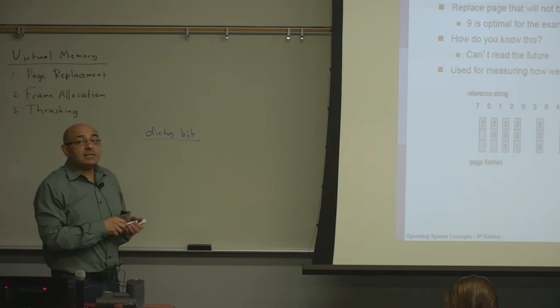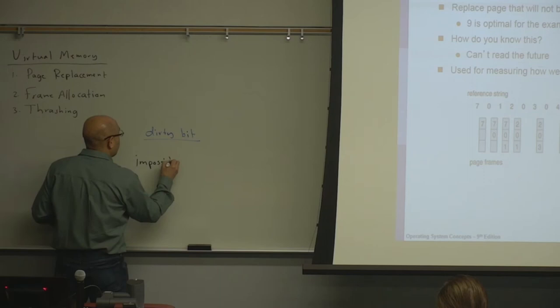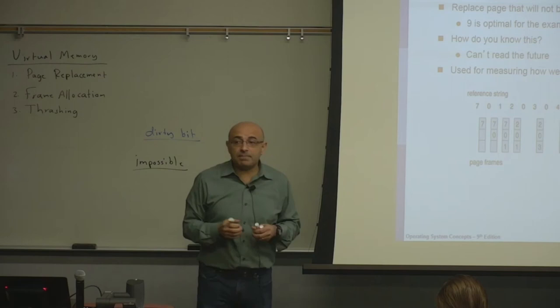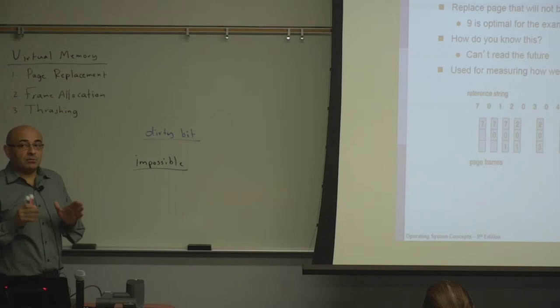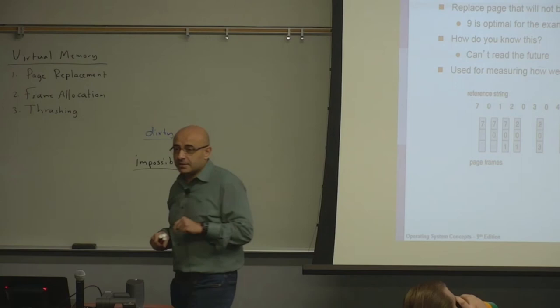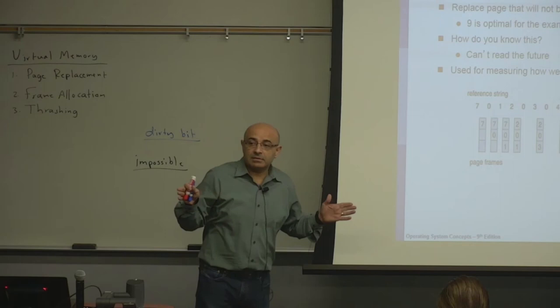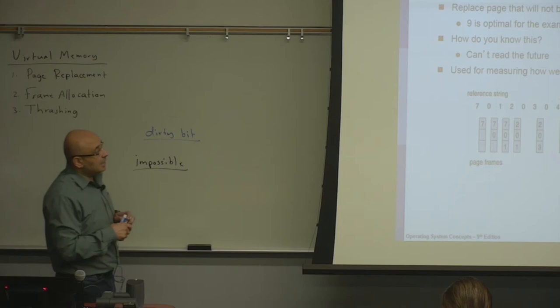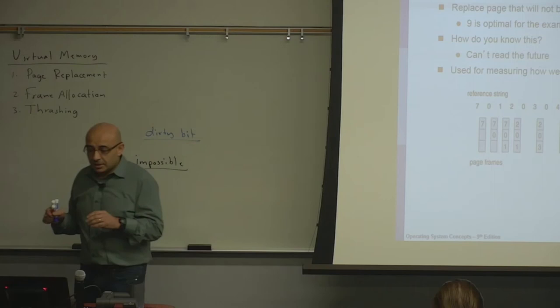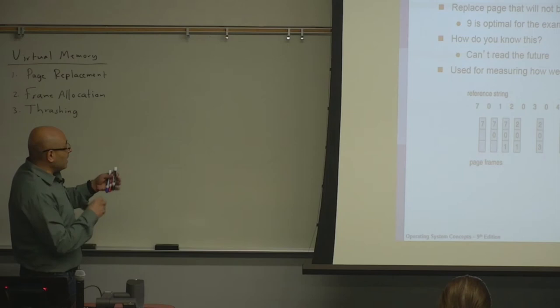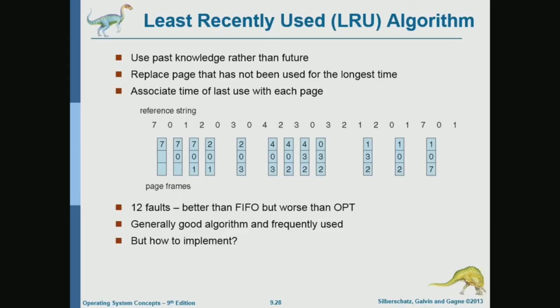A real system doesn't know the future; it knows the past. Given that we know the past but not the future, we can implement an algorithm that approximates the optimal by looking into the past and picking for replacement the page that hasn't been used for the longest period of time — the page whose last access was the earliest. This is the idea of the next algorithm: least recently used (LRU).